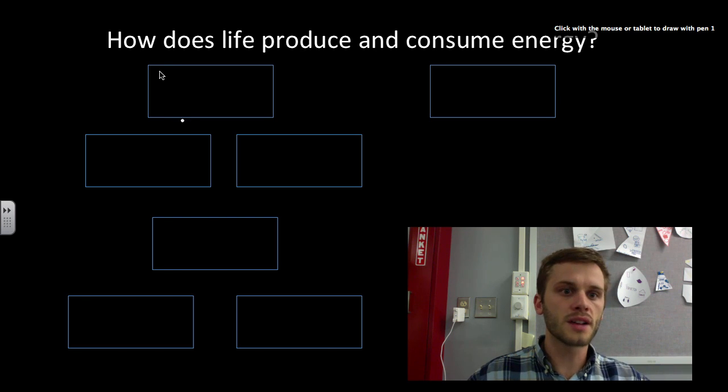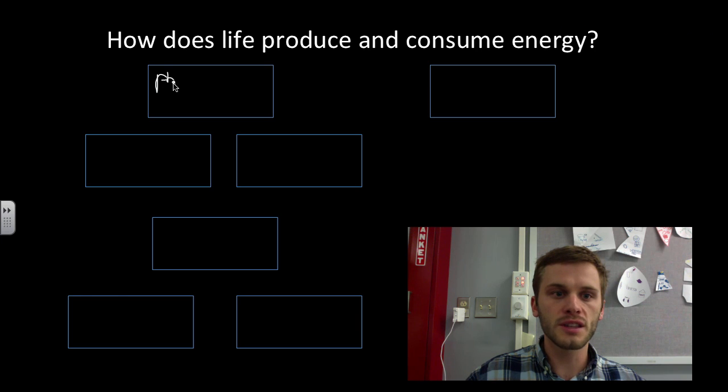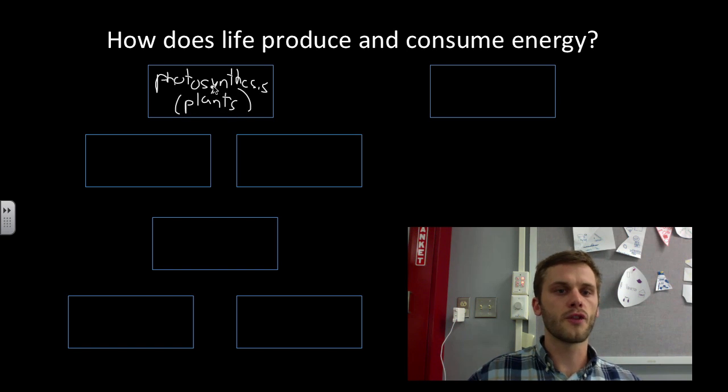Photosynthesis. So photosynthesis takes light energy and turns it into a form of chemical energy called ATP that other things can use. Things that do photosynthesis, we typically think of plants. There's also another example besides photosynthesis of ways life can produce energy, and that process is known as chemosynthesis.